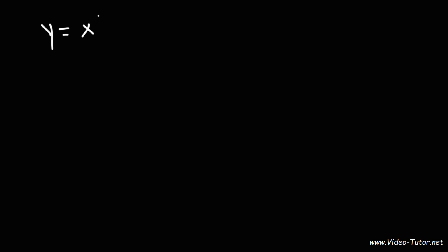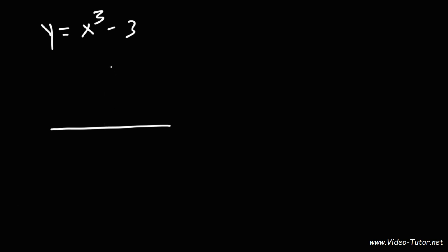Let's try another example: let's graph y equals x cubed minus 3. If we want to draw a rough sketch, we can see that we need to shift down 3 units, so the center is going to be right there. Because we have a positive sign in front of the x cubed, the function is always increasing, so it's going to look like this.